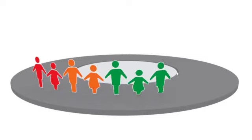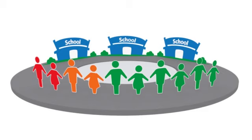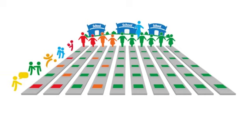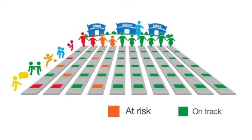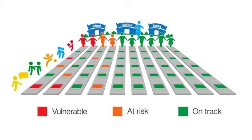Community A is in South Australia. There are 10 children in this community who attend three different schools in the area. At each school, teachers completed the instrument for each child in their first year of full-time school. The scores for each child, for each domain, were then classified as on track, at risk, or vulnerable. In Community A, six out of ten children are not vulnerable on any of the domains, two children are at risk on one or more domains, two children are vulnerable on one or more domains, and one of these children is vulnerable on two or more domains.